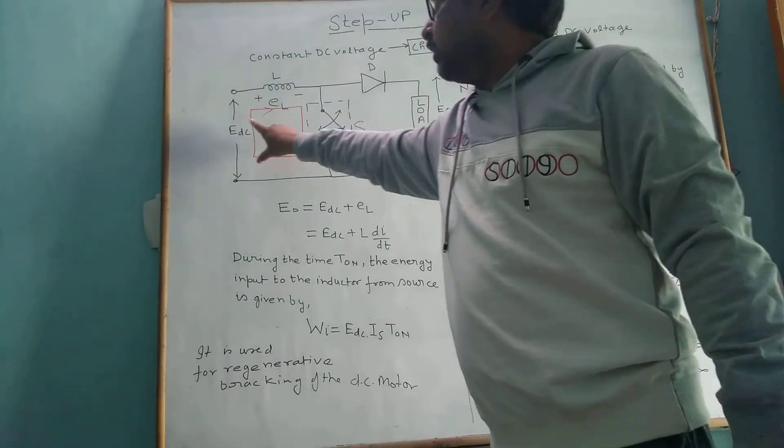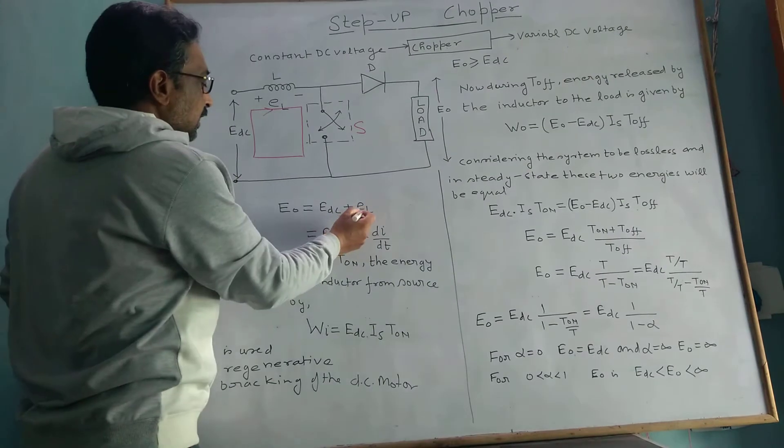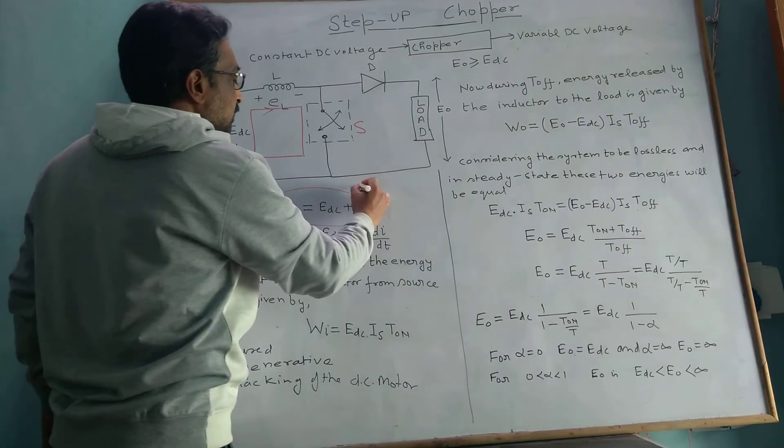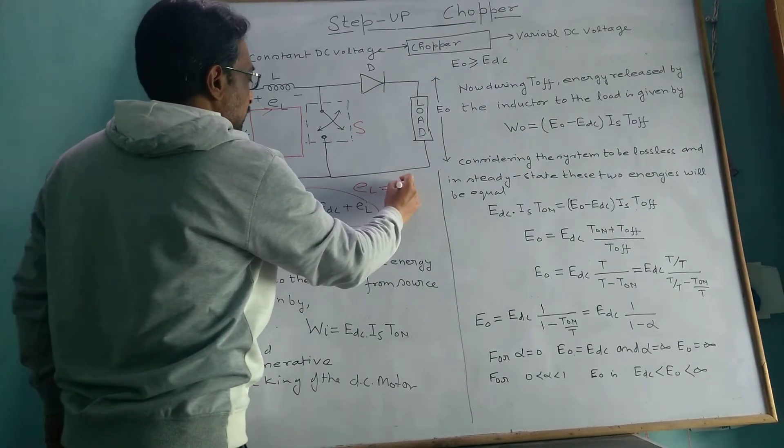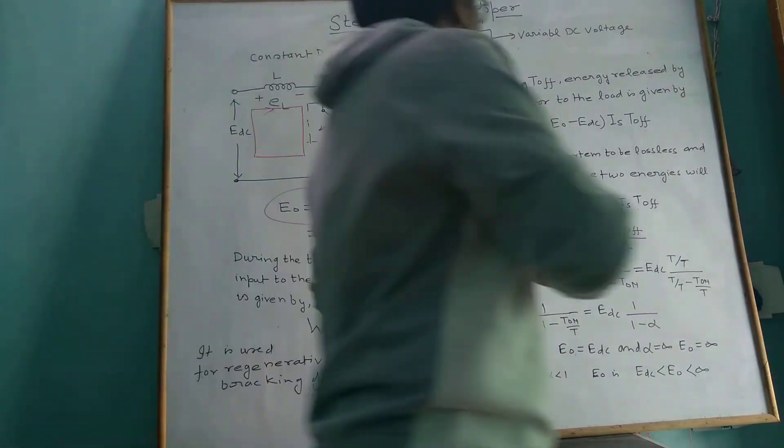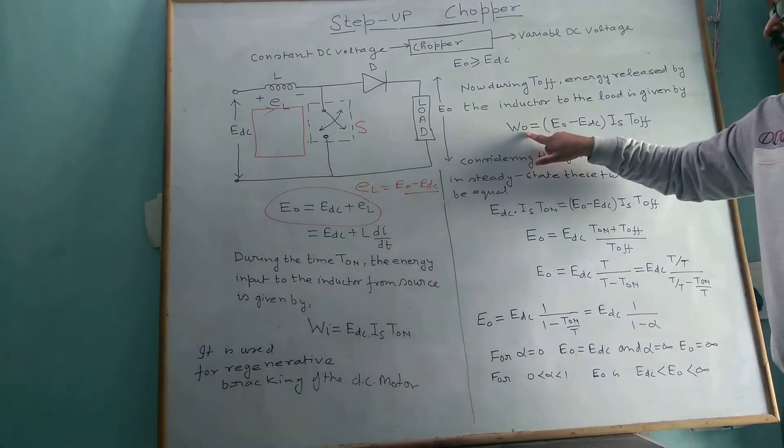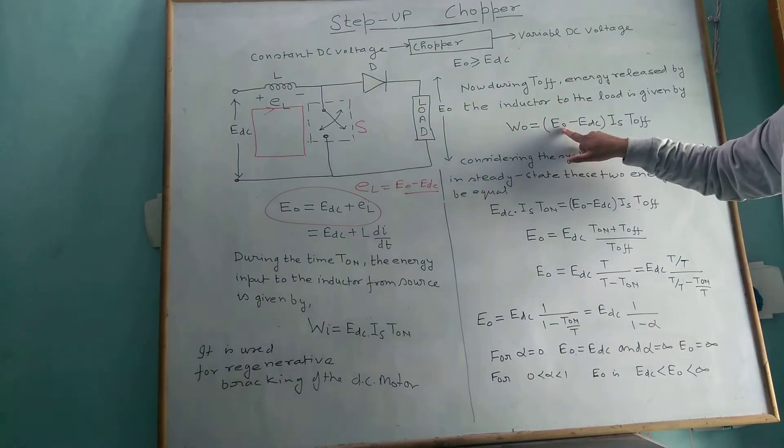E_L equals E₀ minus E_DC. If we look at this, the inductor discharged. W₀ equals E₀ minus E_DC multiplied by I_S into T_off.